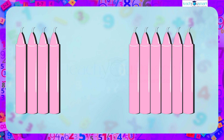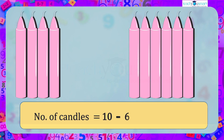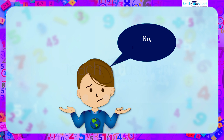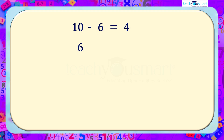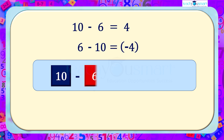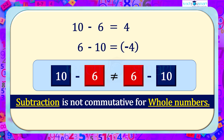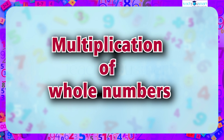Now let's examine if the commutative property holds true for subtraction. If we take six candles out from the packet of 10 candles, only four candles will be left — that is, 10 minus 6 equals 4. But it is impossible to remove 10 candles from six candles; we have a deficit of four candles. Mathematically, six minus 10 equals negative four. Since 10 minus 6 is not equal to six minus 10, subtraction is not commutative for whole numbers.